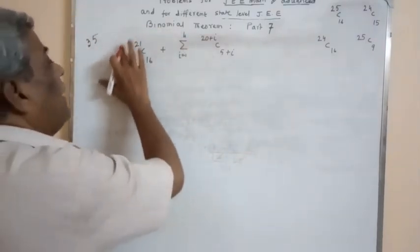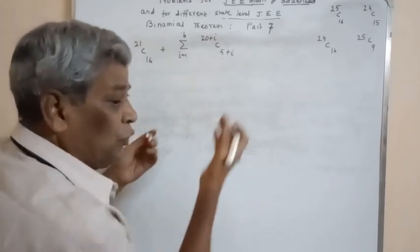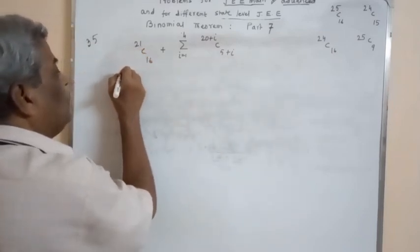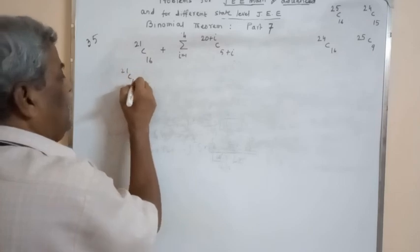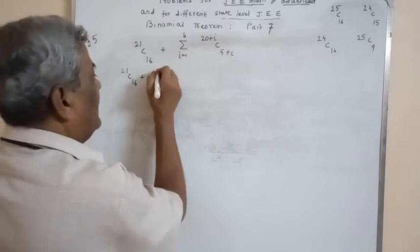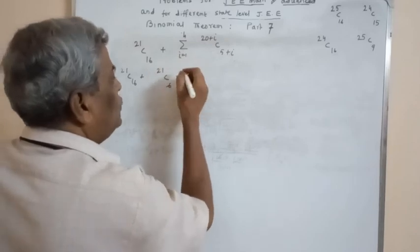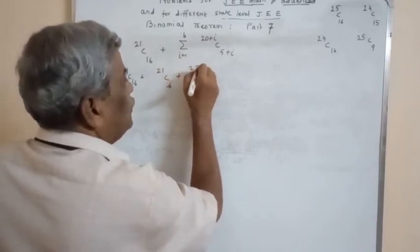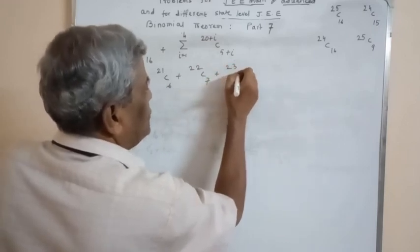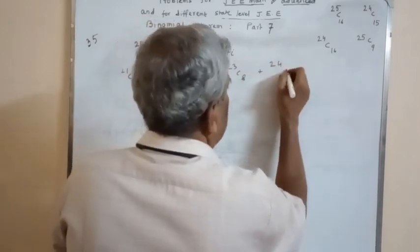We have to find the sum of those binomial coefficients. Expanding the sigma: this equals 21C16 + 21C6 + 22C7 + 23C8 + 24C9. Using the identity nCr + nC(r+1) = (n+1)C(r+1), we can combine consecutive terms.